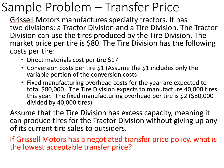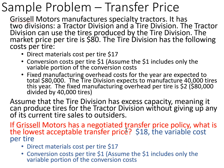Assume the tire division has excess capacity, meaning it can produce tires for the tractor division without giving up any of its current tire sales to outsiders. If Grazile Motors has a negotiated transfer price policy, the general rule is that we need to cover our variable costs. The variable costs are direct materials per tire plus conversion costs, or $18. So the minimum — the lowest acceptable transfer price — would be $18.